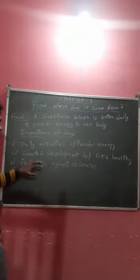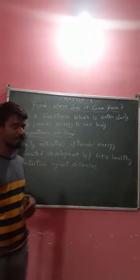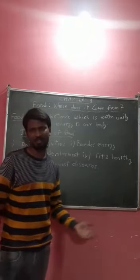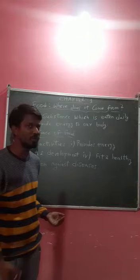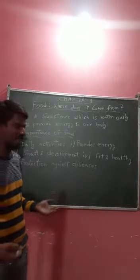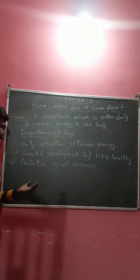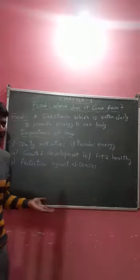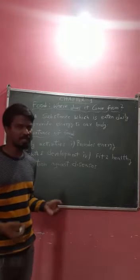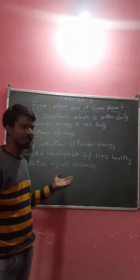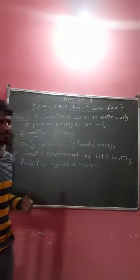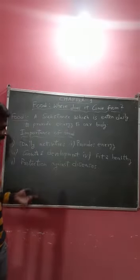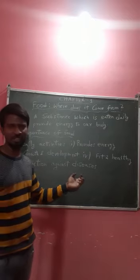Third importance: it helps with the growth and development of our body. Fourth point: it keeps us fit and healthy. So if we eat good food, a balanced diet, we will be healthy. Also, it helps in protection against diseases. If we eat proper food, a balanced diet, a healthy food, you will not get any kinds of diseases. Your immunity system — the system which helps you to fight diseases — will be enhanced, and hence you will be protected against diseases.